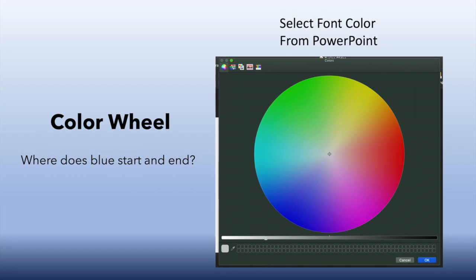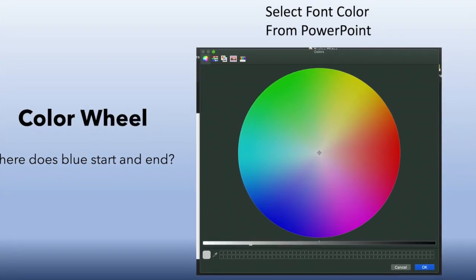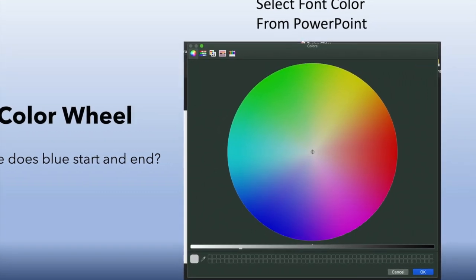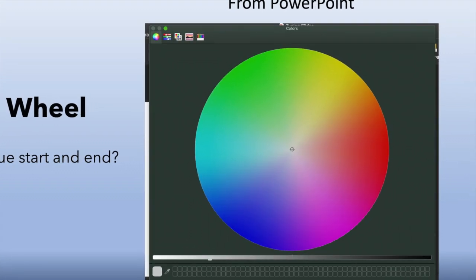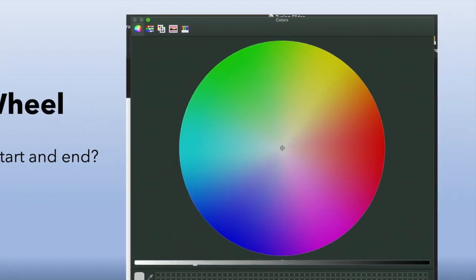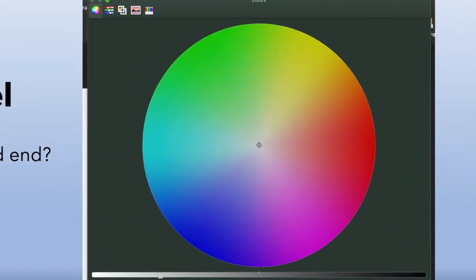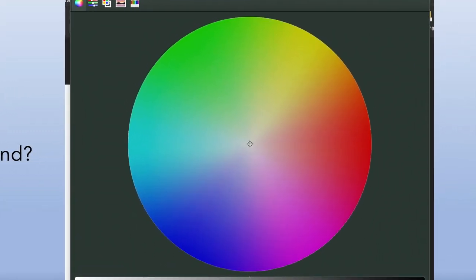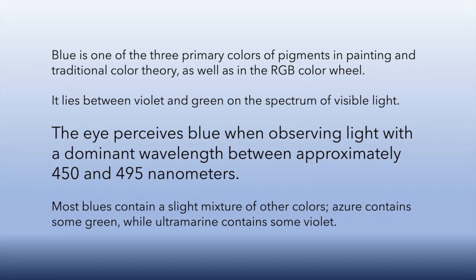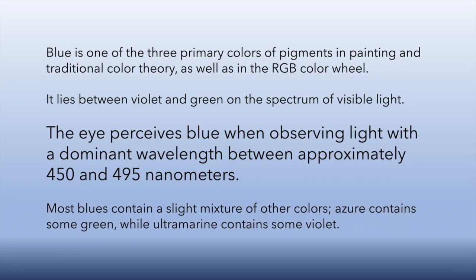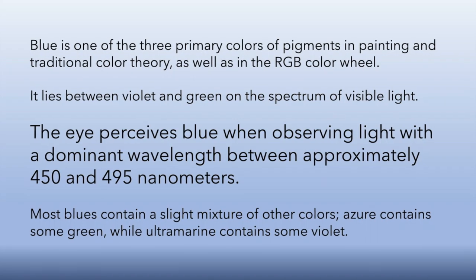On the screen I have a color wheel in Microsoft PowerPoint where you select the color of whatever font you want to use. The question is: where does green end and where does blue begin? Where does blue end and red begin? It turns out we can actually measure colors and decide exactly what shade something is by these measurements. This is physics.